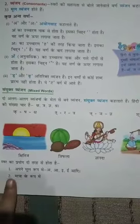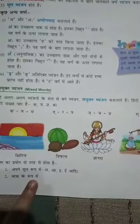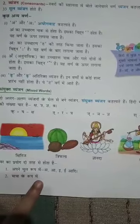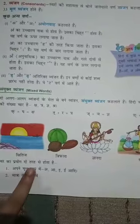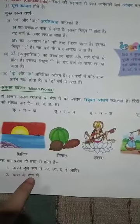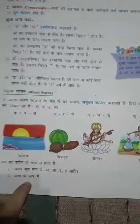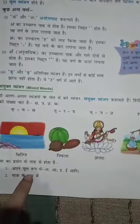And second, maatra ke roop me. Swar jo hote hai, woh maatra ke roop me prayog hote hai, aur apne mool roop me bhi prayog hote hai. Vowels ka use do form me hota hai.